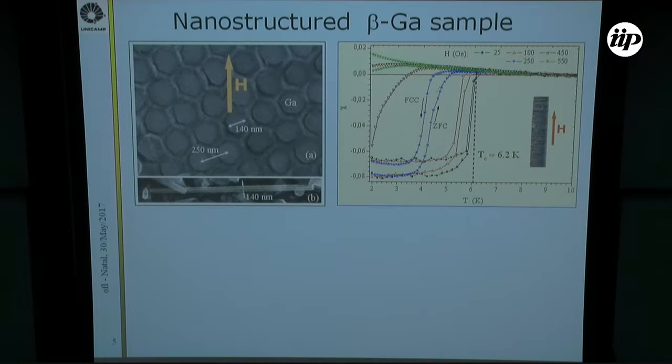To begin with, we did DC magnetization measurements. The critical temperature confirmed that we got the expected for beta-gallium, around 6.2 K. All measurements that I will show here today were done with the field applied perpendicular to the nanowires.